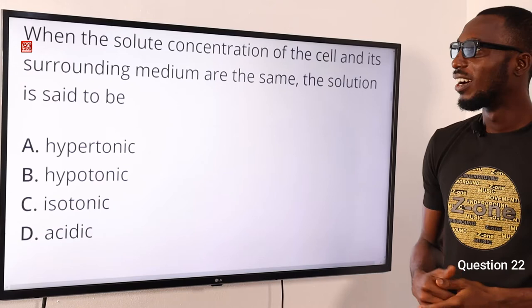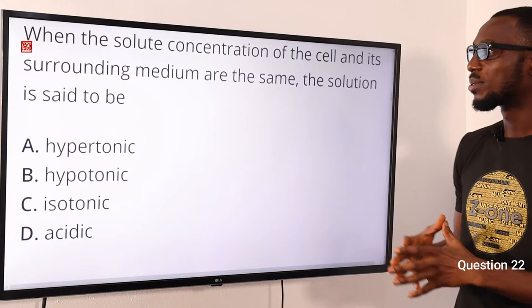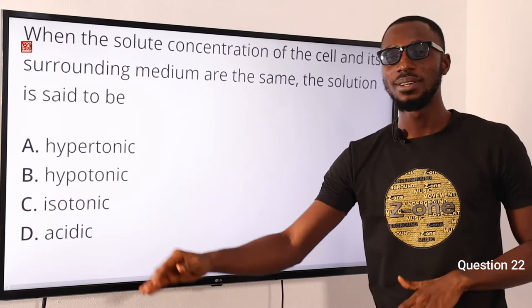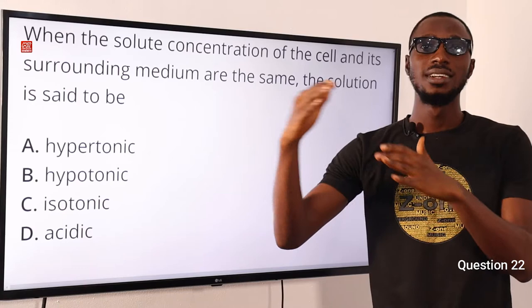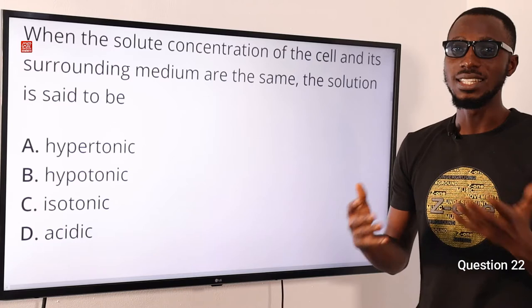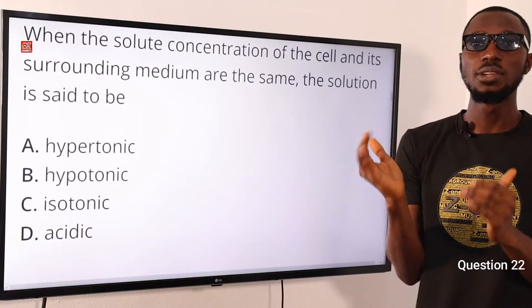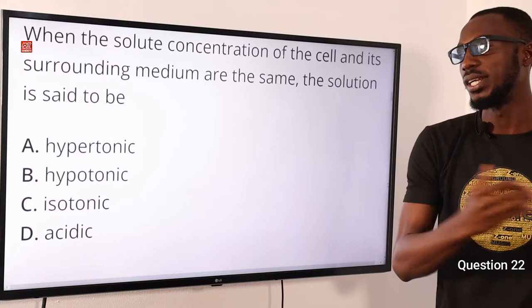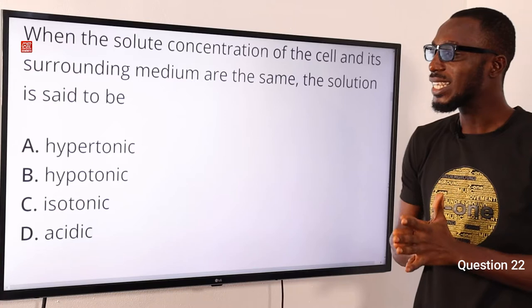Question 22: When the solute concentration of the cell and its surrounding medium are the same, the solution is said to be isotonic — the concentration in the surrounding and the concentration in the cell is the same. Hypertonic means the solution in the surrounding is higher than in the cell; hypotonic is the reverse. Acidic refers to an acid medium whose pH is less than 7 — the lower you go on the pH scale from 7, 6, 5, 4, 3, 2, 1, the more acidity increases. So the correct option is option C for isotonic.